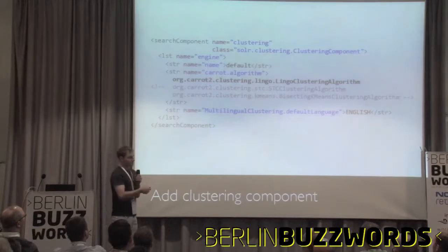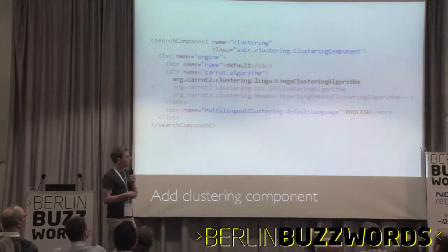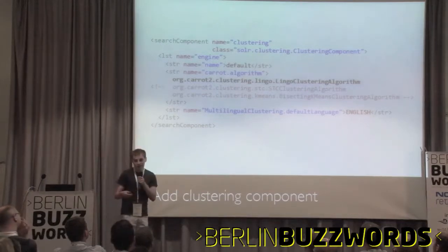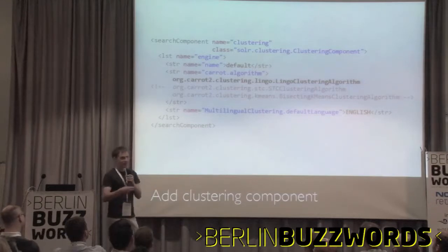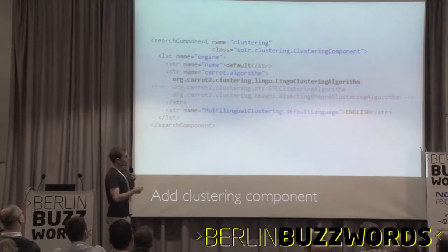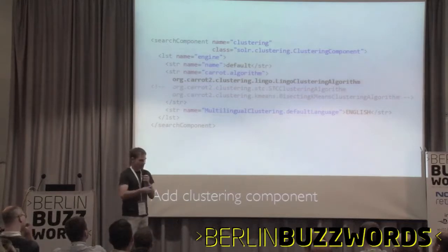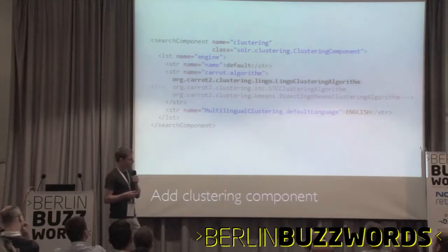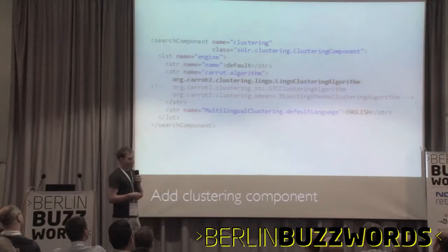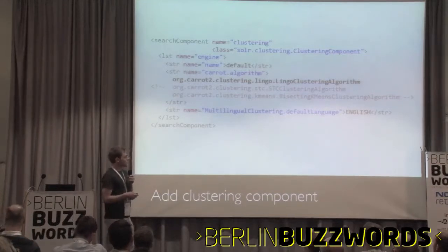The clustering is based on Carrot², and we currently have three algorithms to choose from. The default one is Lingo, which is not very fast but produces nice clusters and nice labels. The other one is STC — that's a classic, it's much faster, and produces slightly weaker labels and clusters but is still useful. And for those who love the classics, there's the k-means algorithm.